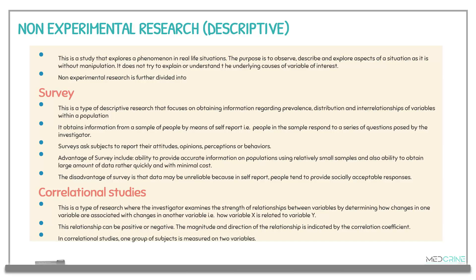The second type of non-experimental research is a correlational study, where a researcher examines the strength of relationships between two variables by determining how changes in one variable are associated with changes in another — for example, how a change in variable X relates to variable Y. The relationship may be either positive or negative, and its magnitude and direction is indicated by a correlational coefficient. In correlational studies, one group of subjects is measured on two variables.